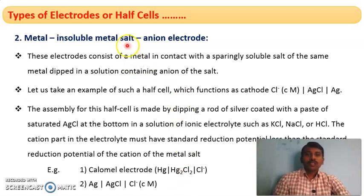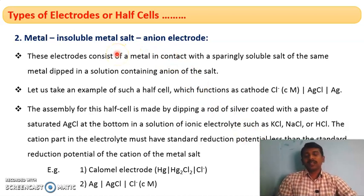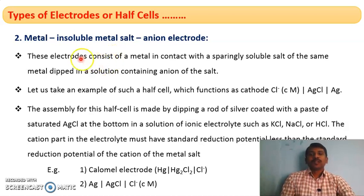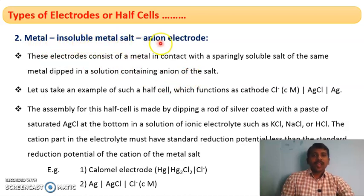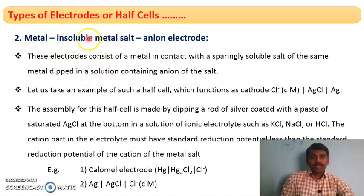The second type is the metal insoluble metal salt anion electrode. These electrodes consist of a metal in contact with a sparingly soluble (insoluble) salt of the same metal, which is dipped in an electrolytic solution containing the anion of that salt. There are three components: the metal, the insoluble metal salt, and the anion in the electrolytic solution — the anion being the same as the anionic component of the metal salt.